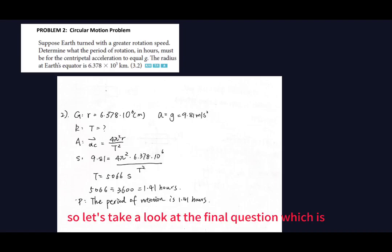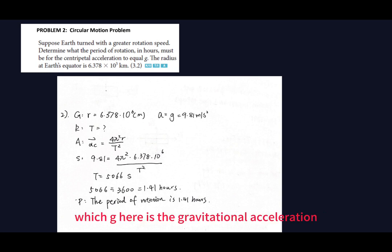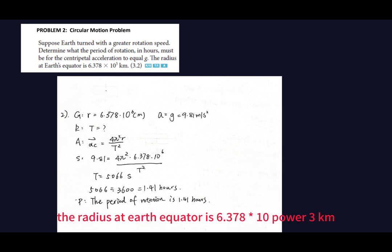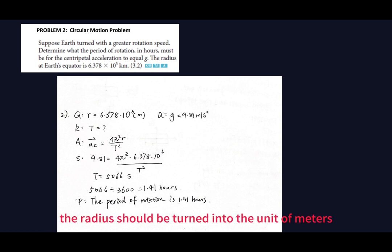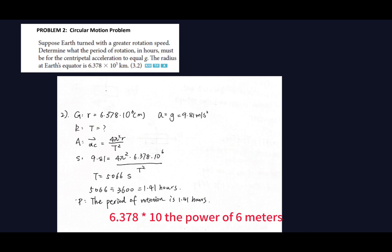Now let's take a look at the final question, which is entirely about circular motion. It says: suppose Earth rotated at a greater speed — determine what the period of rotation in hours must be for the centripetal acceleration to equal g, which is 9.81 m/s². The radius at Earth's equator is 6.378 times 10 to the power of 3 kilometers, which must be converted to meters — 6.378 times 10 to the power of 6 meters — since acceleration uses meters per second squared.